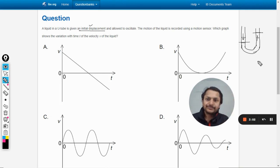Now, the motion of the liquid is recorded using the motion sensor. So definitely, this is going to be simple harmonic motion. If it is simple harmonic motion, definitely the graph of velocity with respect to time cannot be a straight line, cannot be a parabola.